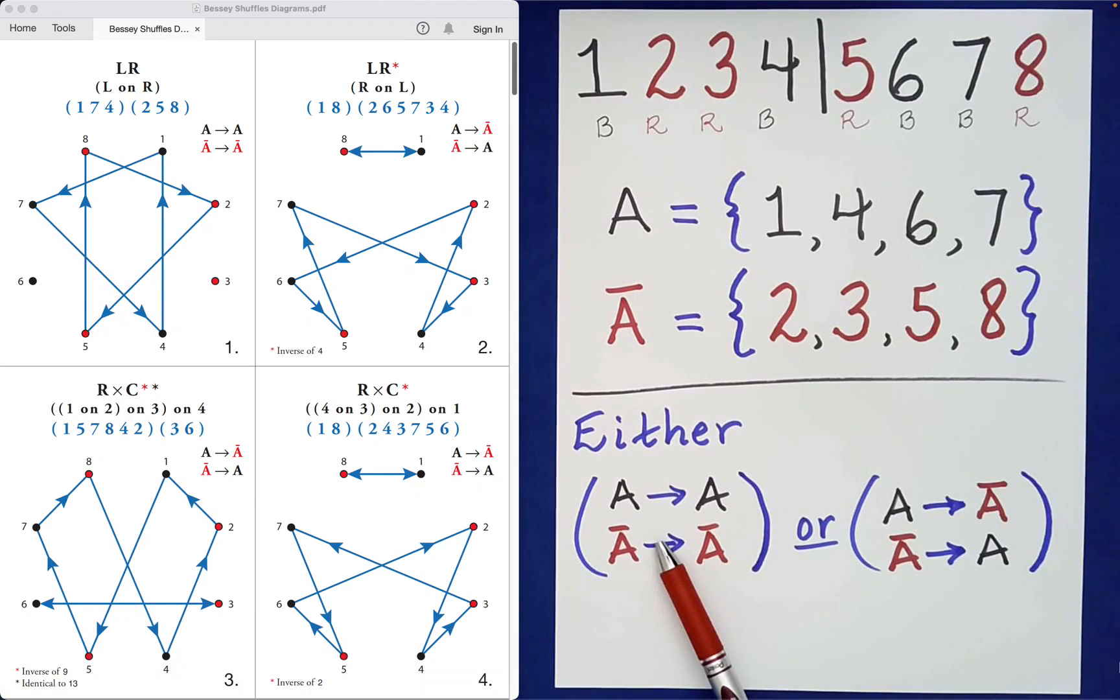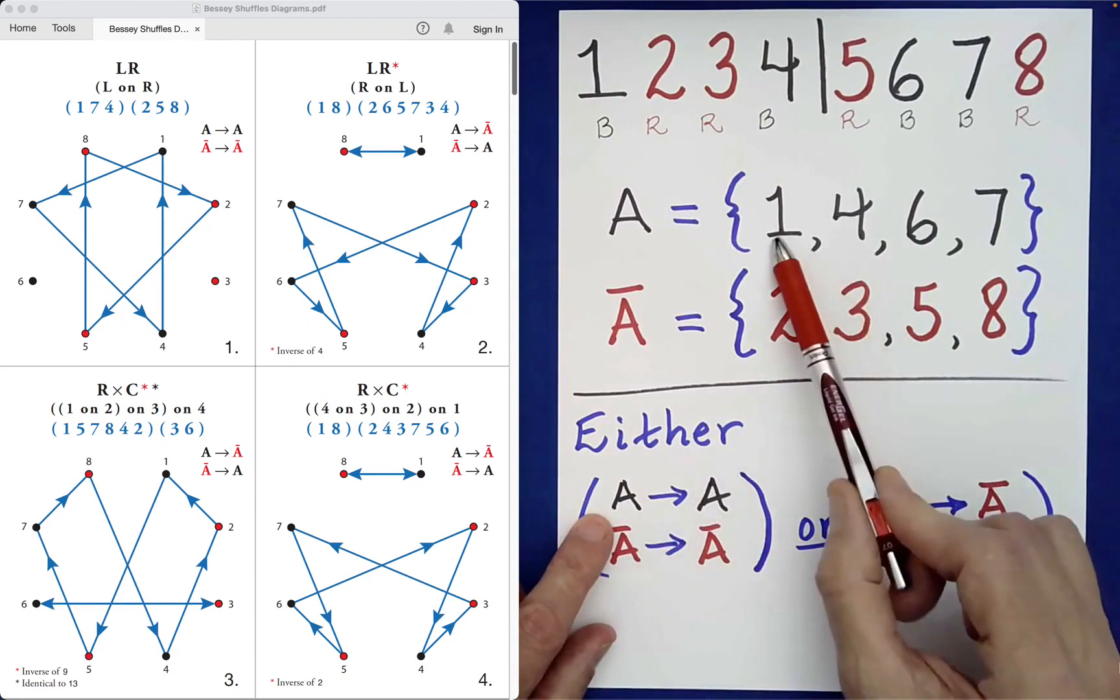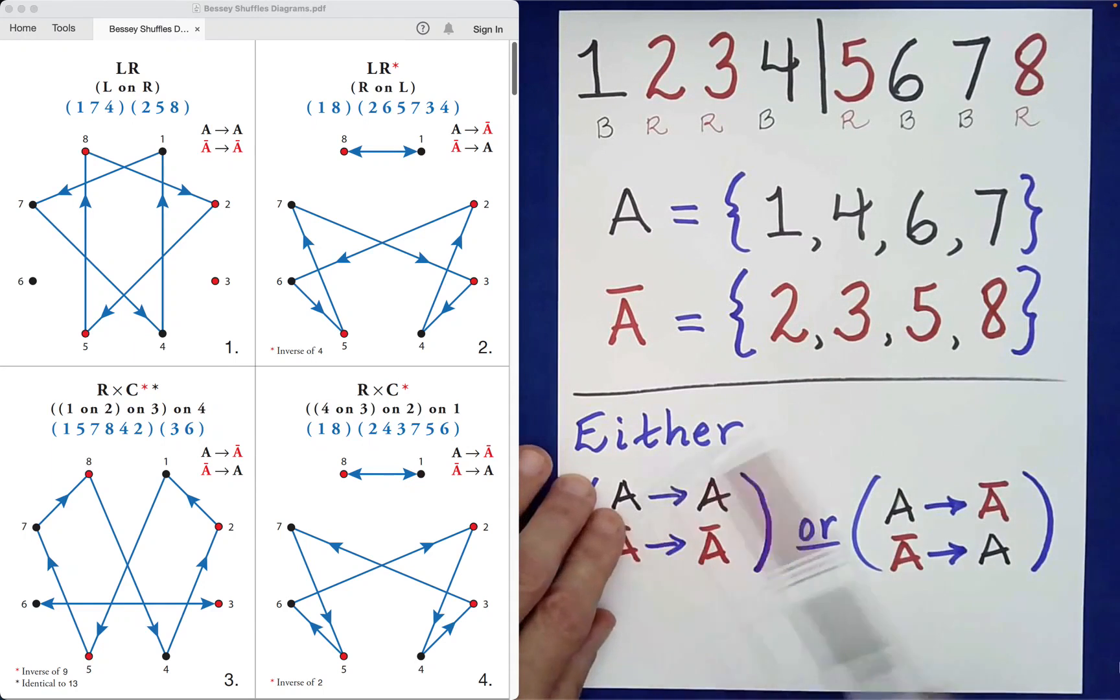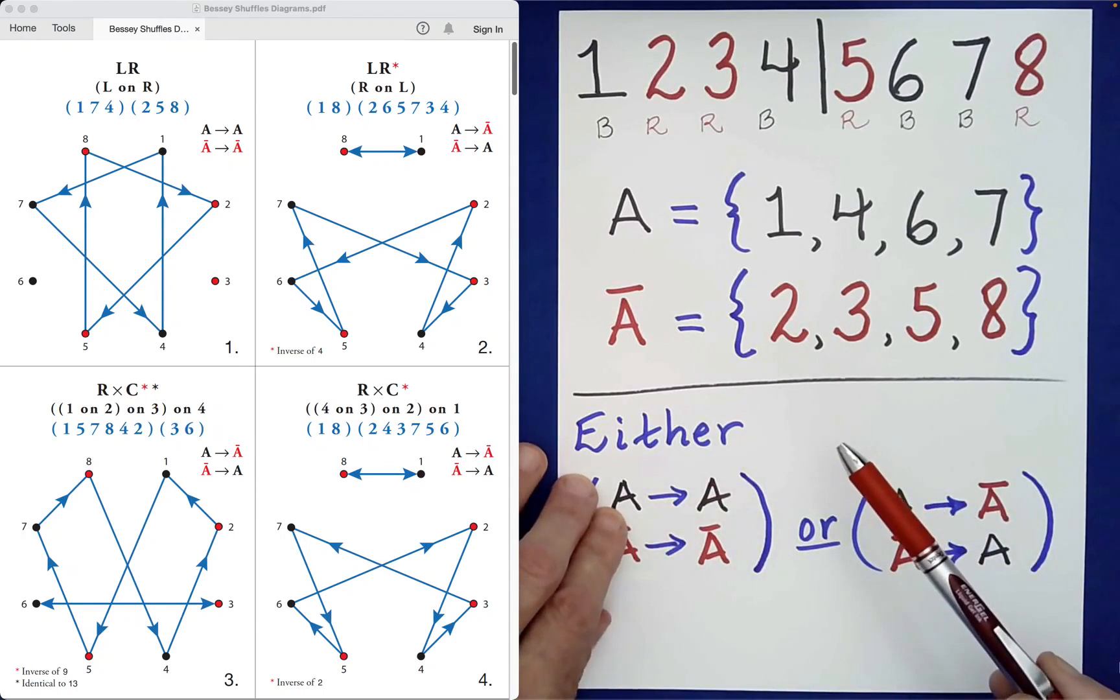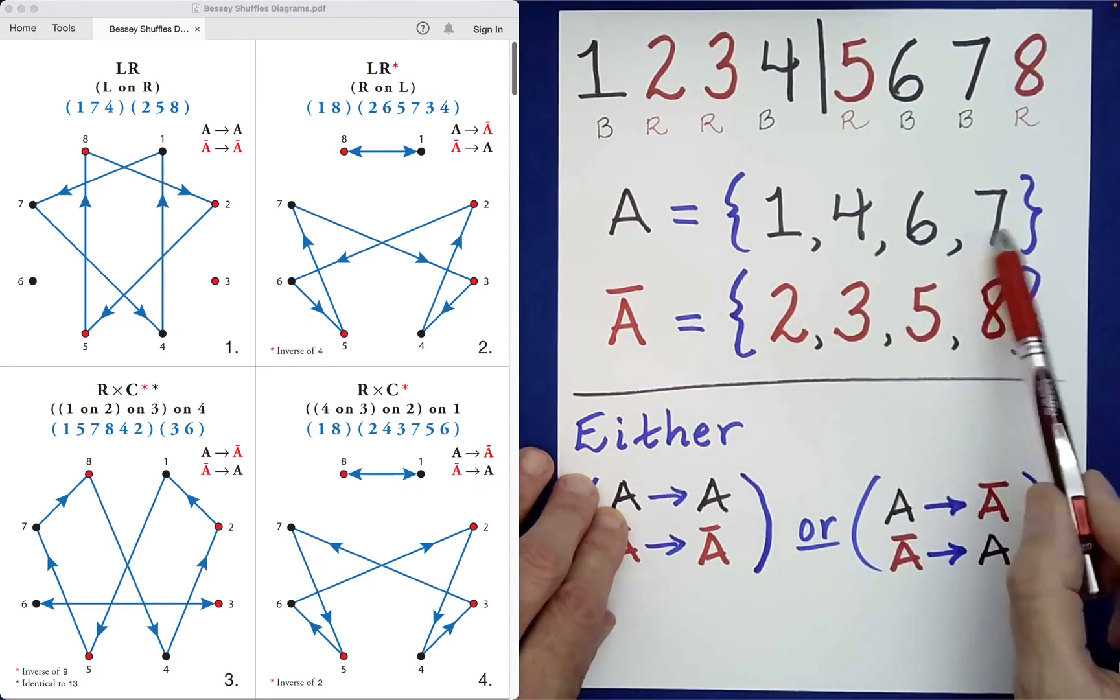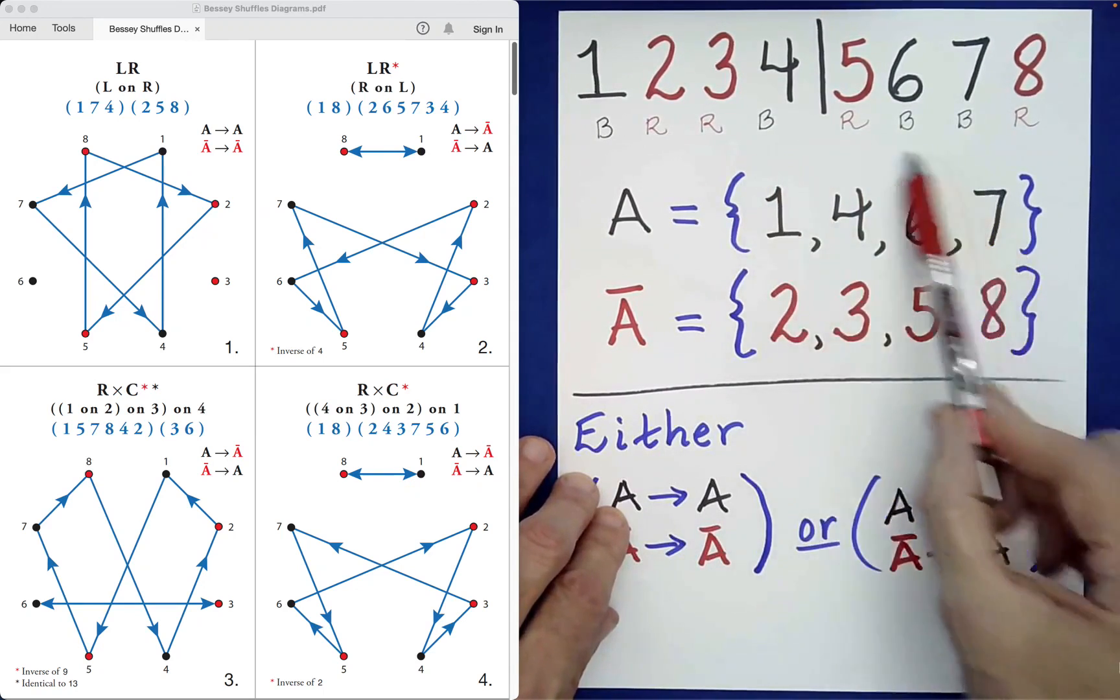So this first one, what it's denoting is the objects in these positions 1, 4, 6, 7, after they've been rearranged or shuffled, will still be in positions 1, 4, 6, 7, even though they may have traded places within these four position values.